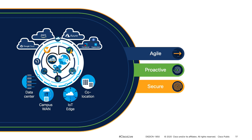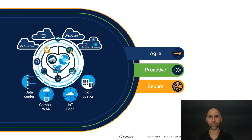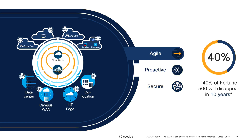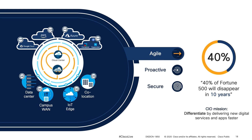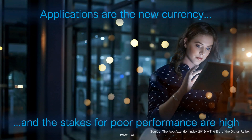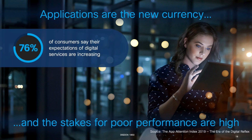Let's start at our first enabler for faster time to market: agility. Some reports in the market indicate that 40% of the Fortune 500 list will disappear in the next 10 years. What will prevent your company from being part of this list? Innovation. Therefore, several CIOs' mission is to deliver differentiation through new digital services and applications before their competitors do. It's either innovate or die in today's world. With this in mind, applications are the new currency. We are increasing our expectations and hunger for new digital services and applications.